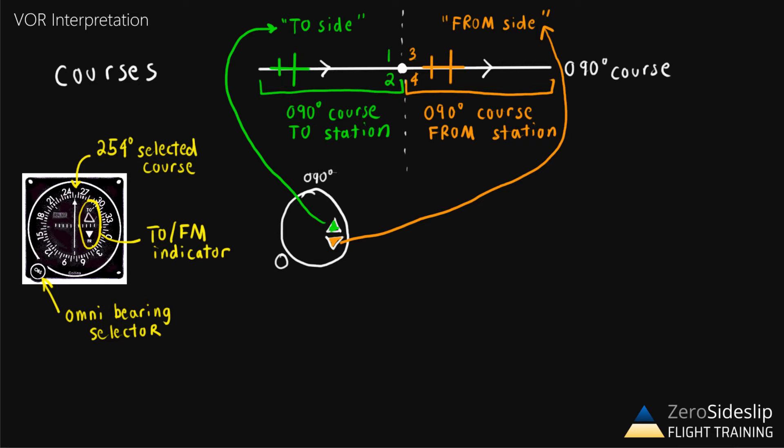Now the course deviation indicator is what is going to narrow us down from two quadrants to one quadrant. Understanding the course deviation indicator is probably the most tricky part of understanding VORs. But if you can learn this correctly, it's going to make your life so much easier. So the way we're going to interpret this is as follows.